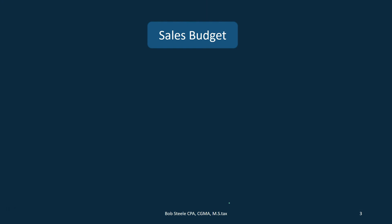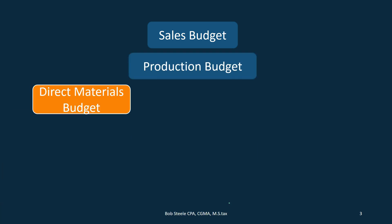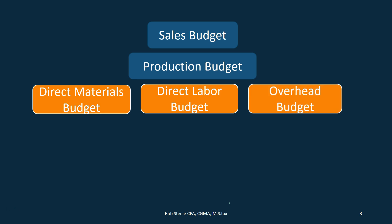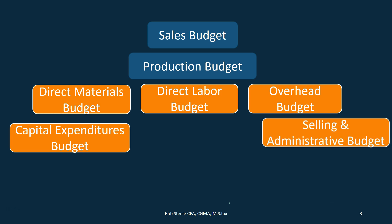Let's go through the quick list once again of the components of the budget. We have the sales budget — we need to do it in this order. We then have the production budget, and from that we can create the direct materials budget, the direct labor budget, the overhead budget, as well as the capital expenditures for large projects and equipment we might be purchasing, and the selling and administrative budget.